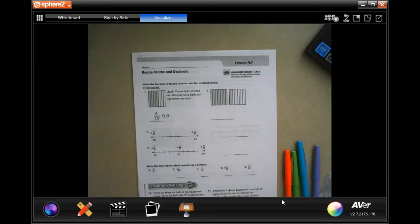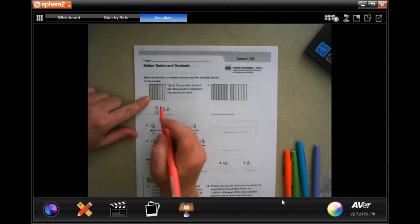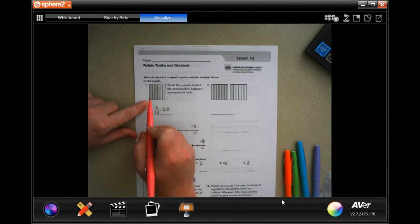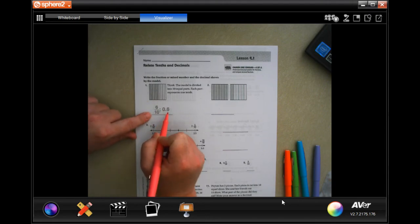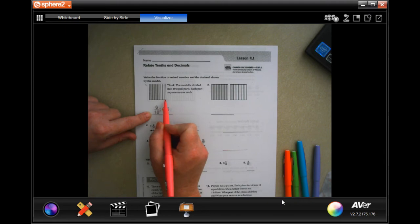Hey y'all, welcome to fourth grade Chapter 9 Lesson 1. We're gonna go ahead and get started. These are talking about models using each line as point one. Okay, so six out of ten of them are filled, which is six tenths or six in the tenth spot.